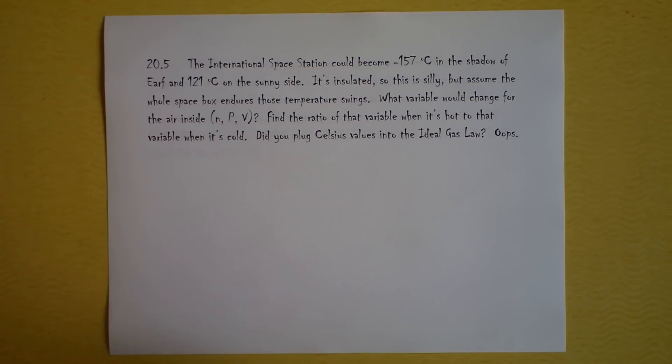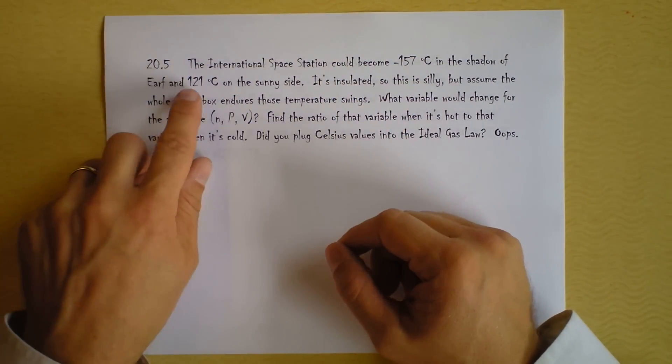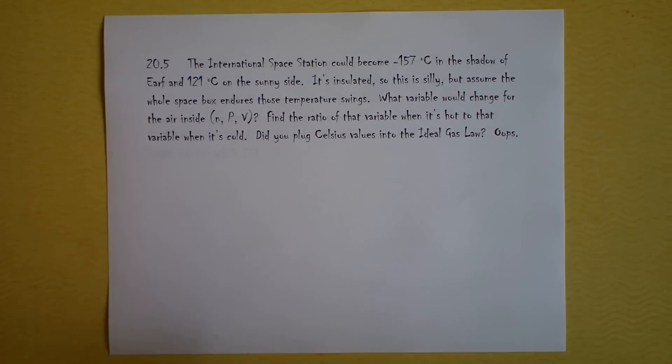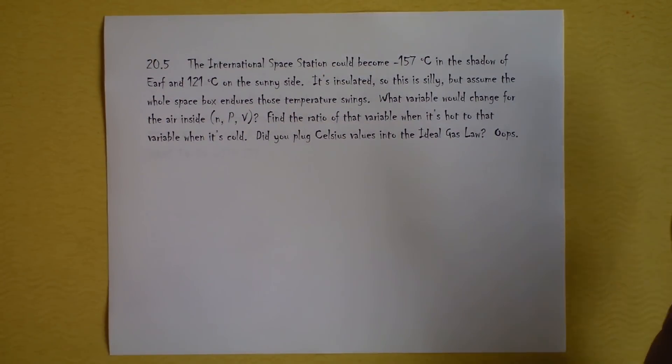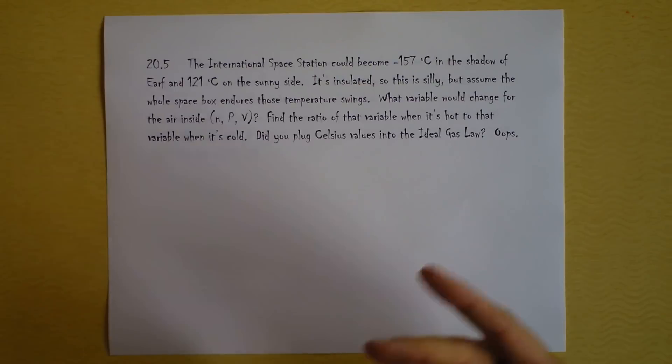This one is about the ISS. At our high school ISS stands for in school suspension, so sometimes these discussions get off to a very weird start. But in this case the International Space Station is what we're discussing. And it turns out that in the darkness, in the darkness of space, it's negative 157 degrees Celsius if it's in the shadow of earth for a little bit. But then 121 degrees Celsius on the sunny side. So this is like way freezing water and this is quite a bit boiling water on the sunny side. So again this is a little bit silly, it's not a reasonable question because the thing is super insulated because of this exact fact. But assume that the whole space box endures these temperature swings.